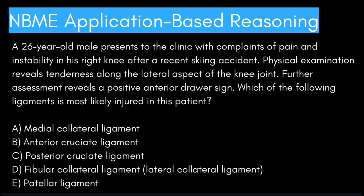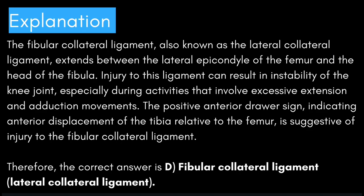All right, I think I gave you guys enough time. Moving on — the fibular collateral ligament, also known as the lateral collateral ligament, extends between the lateral epicondyle of the femur and the head of the fibula. Injury to this ligament can result in instability of the knee joint, especially during activities involving excessive extension and abduction movements. The positive anterior drawer sign, indicating anterior displacement of the tibia relative to the femur, is suggestive of injury to the fibular collateral ligament. Therefore, the correct answer is D: fibular collateral ligament / lateral collateral ligament.